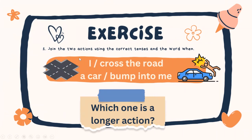Now, can you join two actions using the correct tenses and the word 'when'? You have to think which one is the longer action and use the past continuous tense, and which one is the shorter action and use the simple past tense. I'll give you one to two minutes to think of the answer. And don't forget you need to use the word 'when' when we link two actions together.